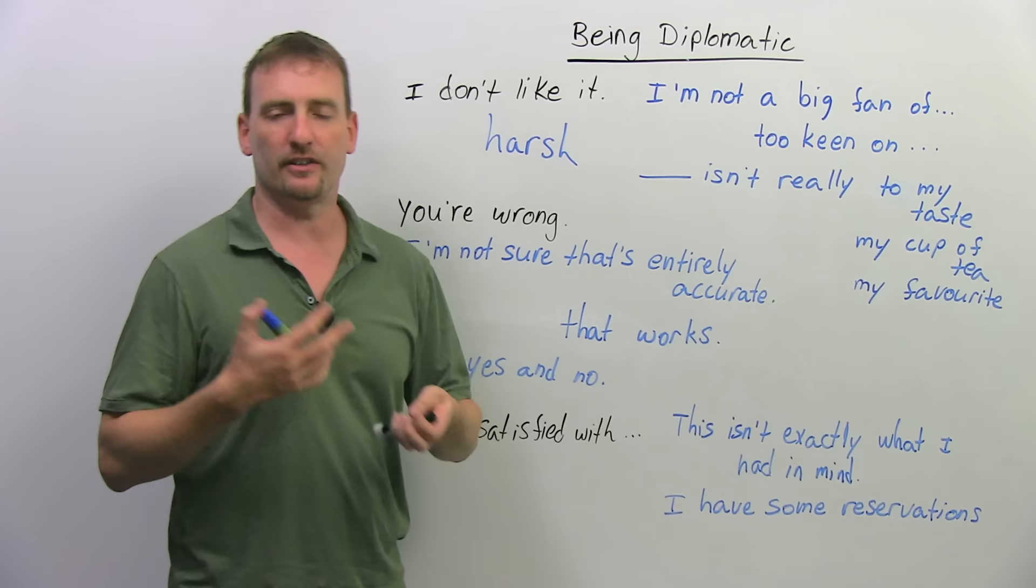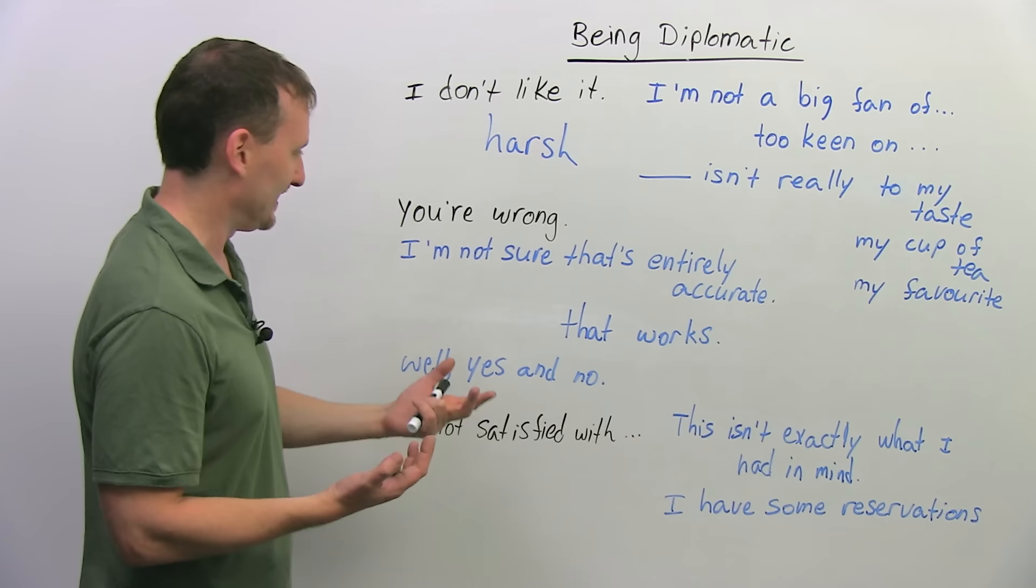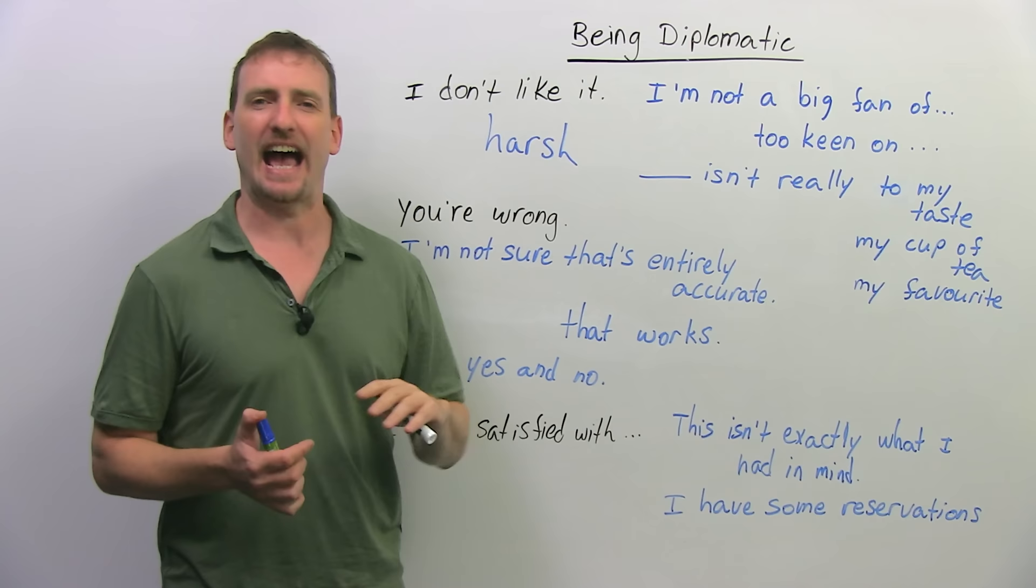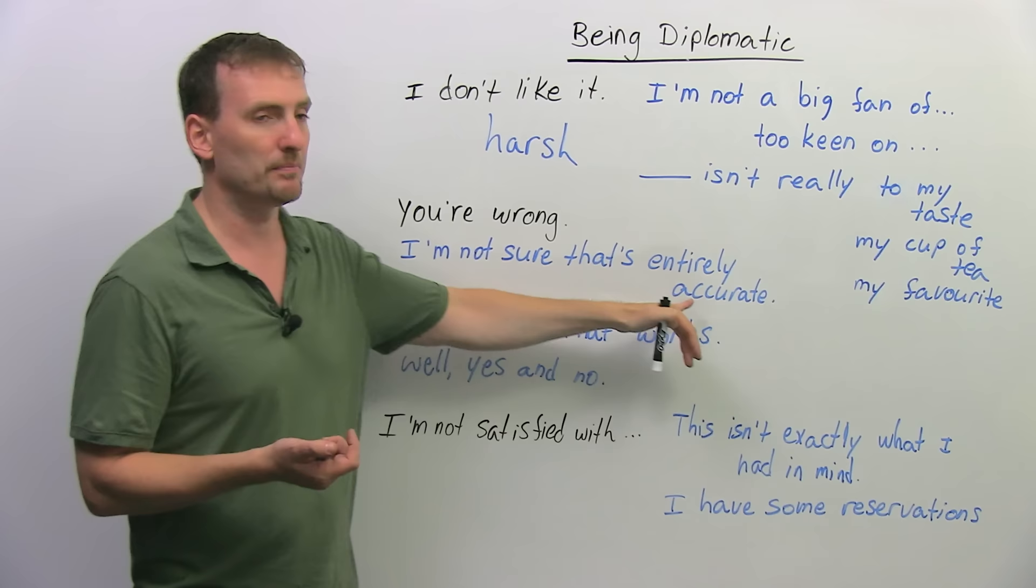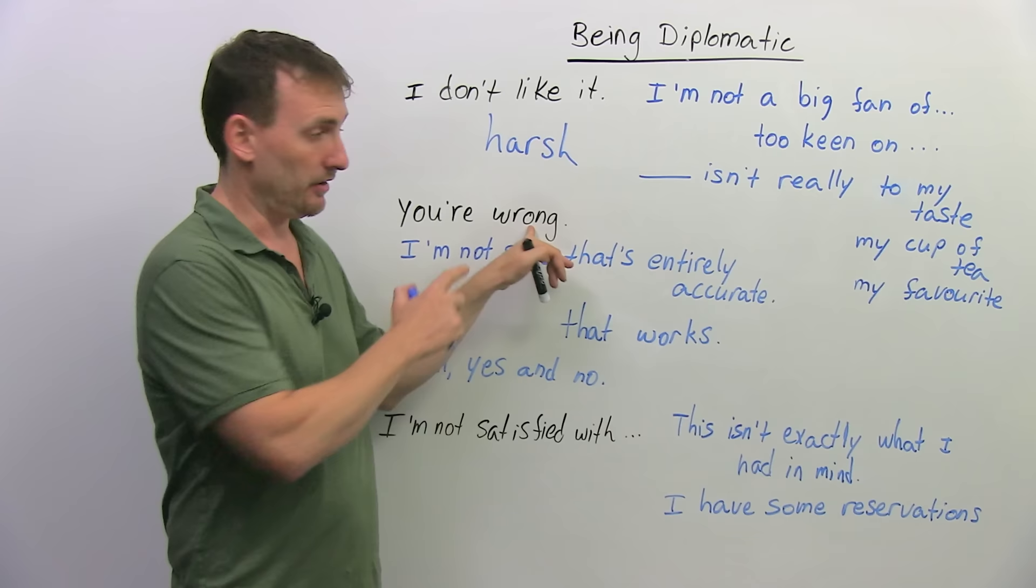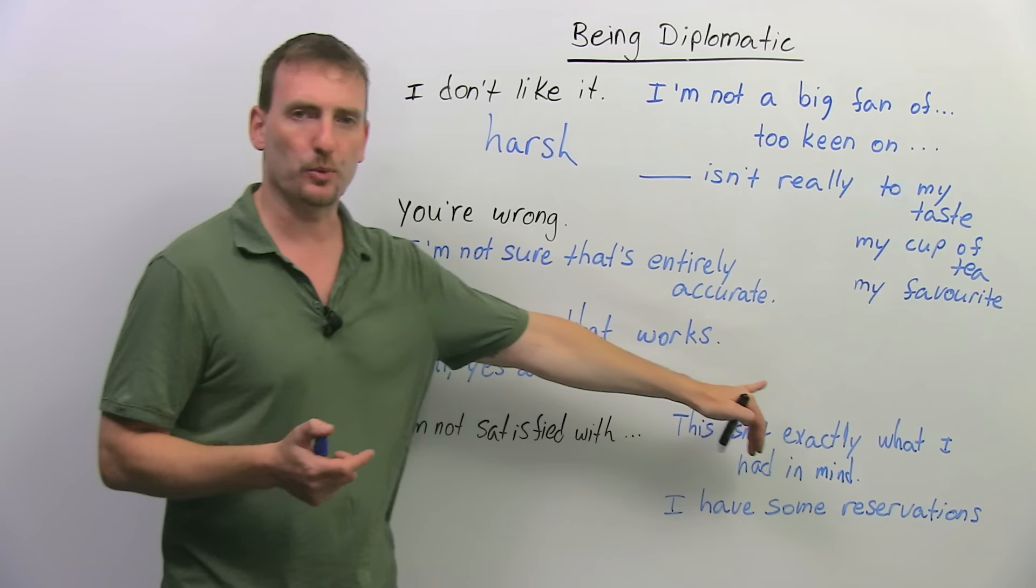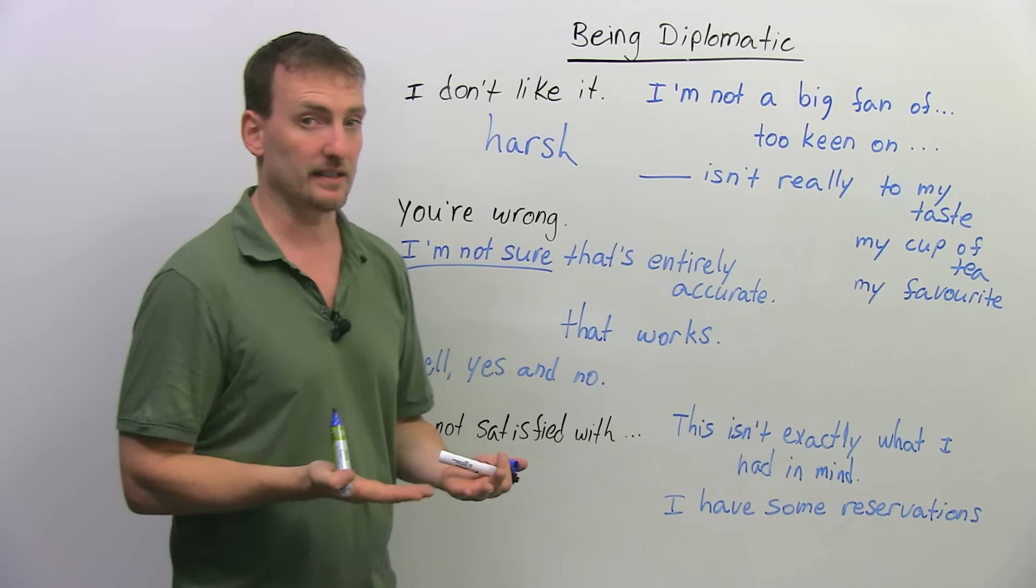Somebody states an opinion or states an argument about something, you say, you're wrong. Again, nobody likes to be told that they're wrong. So, you can basically suggest it without actually saying it. I'm not sure that's entirely accurate. Accurate means, like, very correct, like, very exact. So, I'm not sure that's entirely accurate. When something's not accurate, it's just not right, right? So, basically, you're saying the same thing as you're wrong, but in a particular way that opens the door to go give them the correct information, right? And they're able to accept it more easily because you didn't tell them they're wrong. They're not wrong, they're just not exactly right, but it's the same idea. I'm not sure that works. So, I'm not sure that argument works or I'm not sure that plan works or I'm not sure something. Again, as soon as you say, I'm not sure, you're presenting it as an opinion, and therefore you open the door to discussion, right?